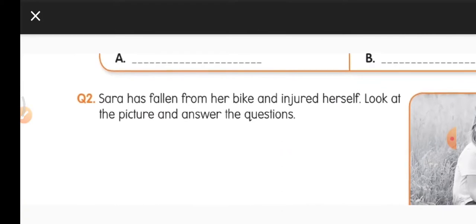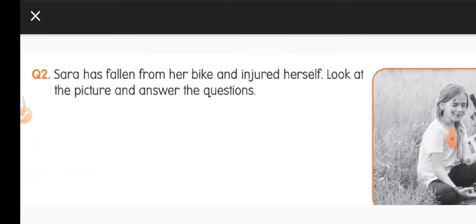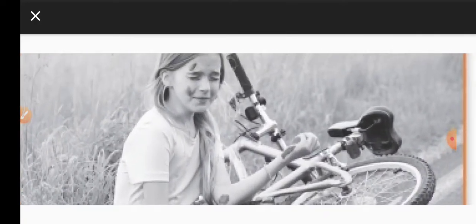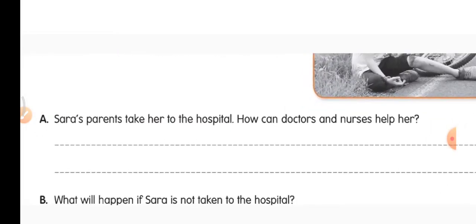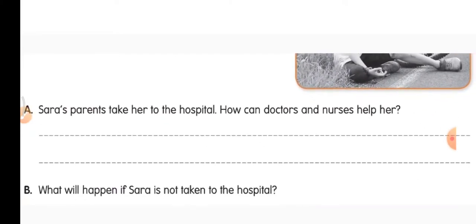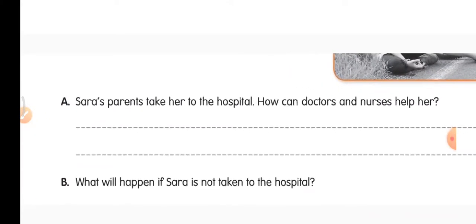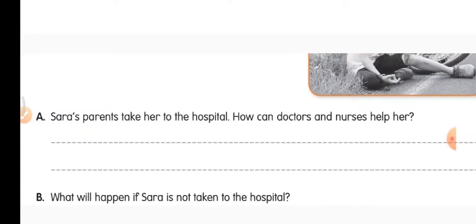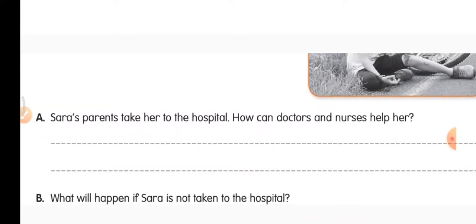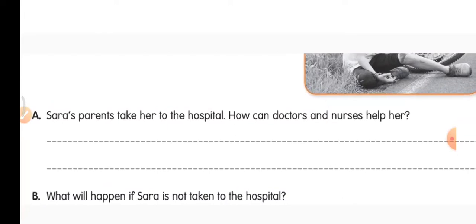Question 2. Sarah has fallen from her bike and injured herself. Look at the picture — see how Sarah fell down. She has got bruises on her knee, face, and elbow. Sarah's parents take her to hospital. How can doctors and nurses help her? The nurse can take care of her and do first aid, like applying antiseptic lotion and tying a bandage, and the doctor can prescribe medicines.